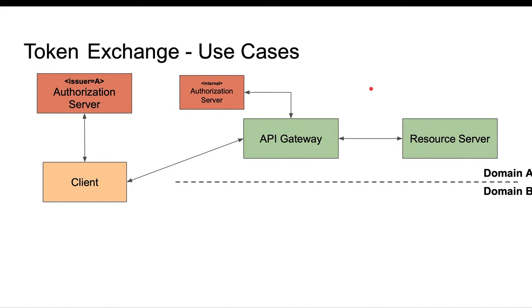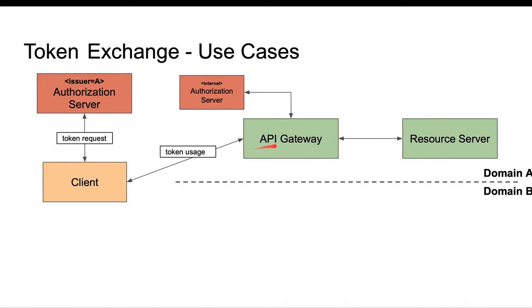A typical flow would look like this: the client requests a token, and uses the token against the API gateway. The API gateway does its typical validations — the token has not expired, the token was issued for this domain, in this case domain A. Before passing this token to the resource server, the API gateway has been configured to request a new token — it's going to do a token exchange.